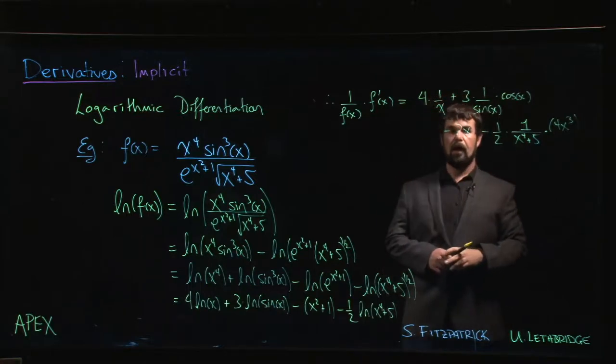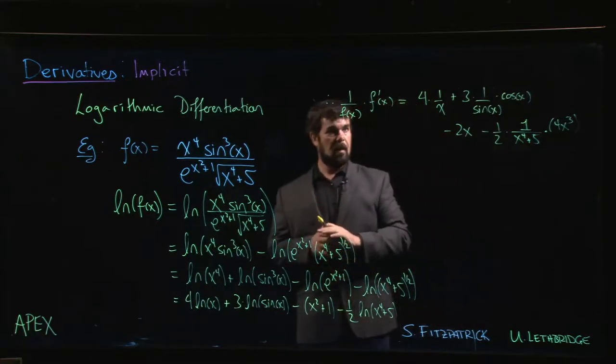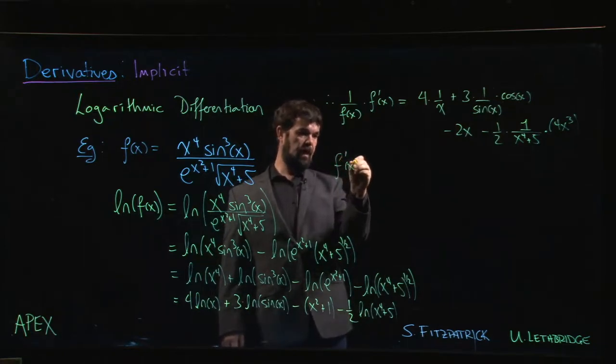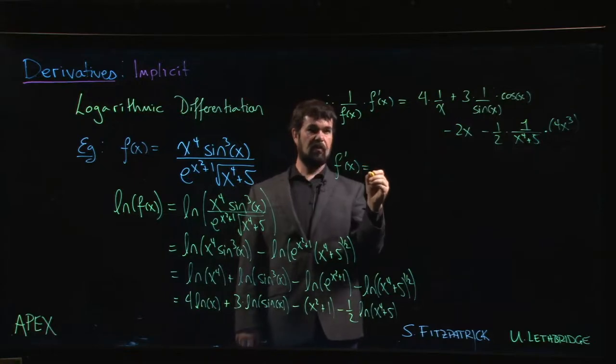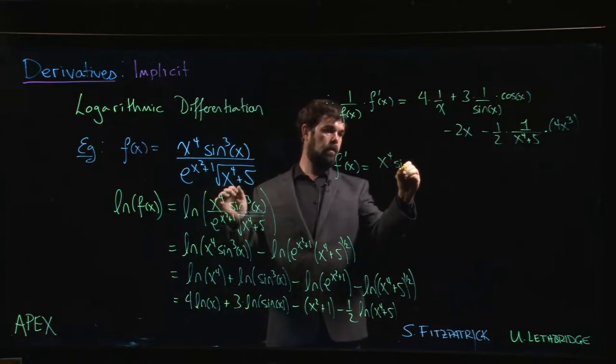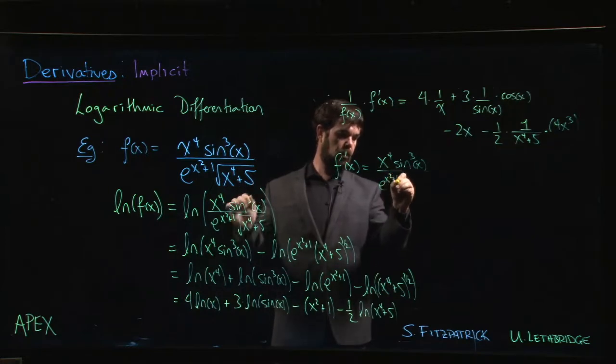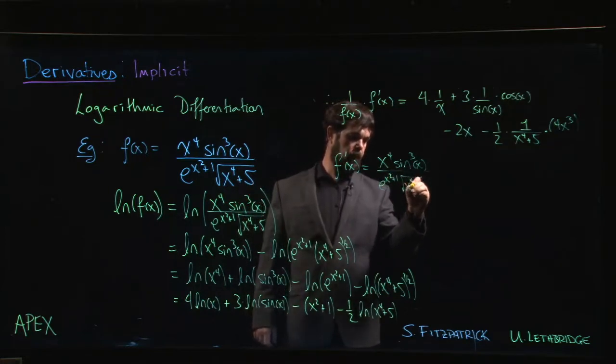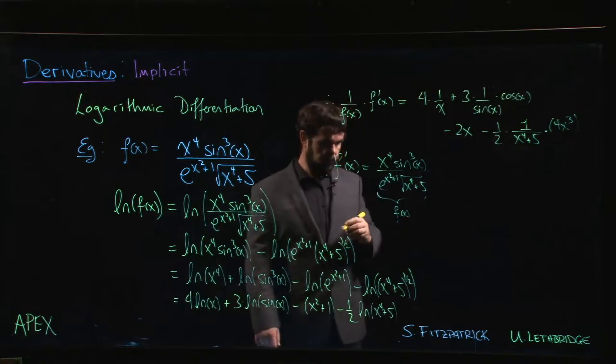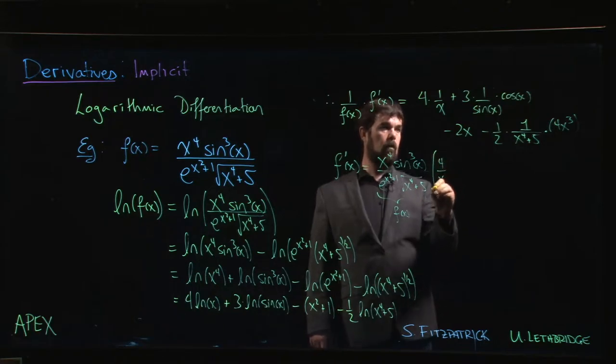Almost done. There's still one thing: we still have to multiply by f of x, and keep in mind that that f of x has to multiply everything. So f prime of x is f of x—which is right here: x to the 4, sin cubed x, e to the x squared plus 1, over the square root of x to the 4 plus 5—times 4 over x plus 3. If you want cos over sine, you could write that as cotangent minus 2x.